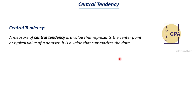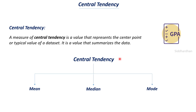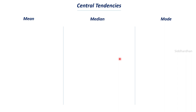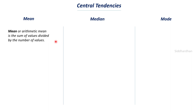There are three main types of central tendencies: mean, median, and mode. Mean, or arithmetic mean, is the sum of values divided by the number of values — it's also called the average. To find the mean, we take all the data, add all the values, and divide by the number of data points. The formula is: m = Σx / n, where m is the mean, Σx is the sum of all data points, and n is the number of values.